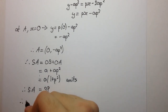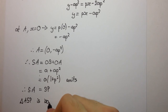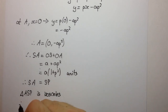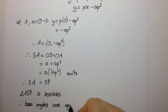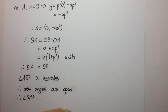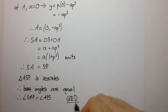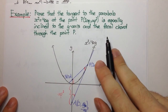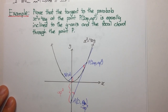Therefore, triangle ASP is isosceles, and therefore the base angles are equal. So angle SAP equals angle APS, and we've shown what we needed to prove. The key trick here was to understand the wording of the question, get it into a diagram, and then find the best and most efficient way to solve it. Thanks for watching.